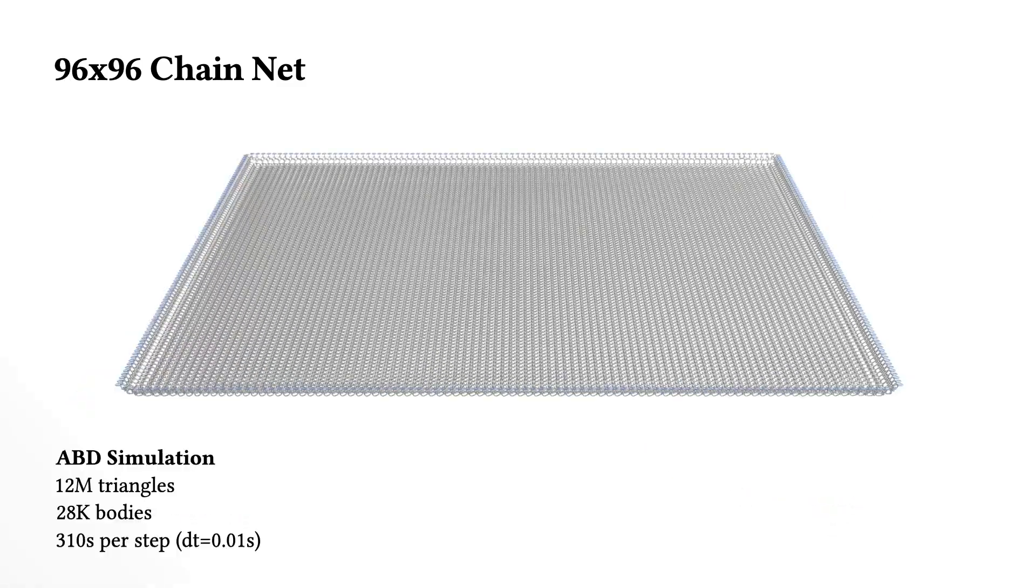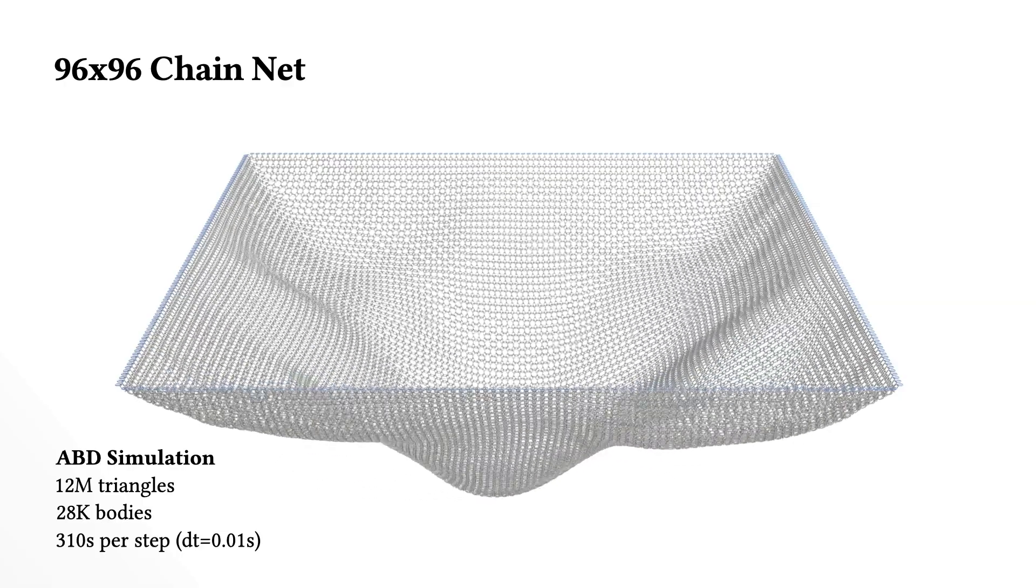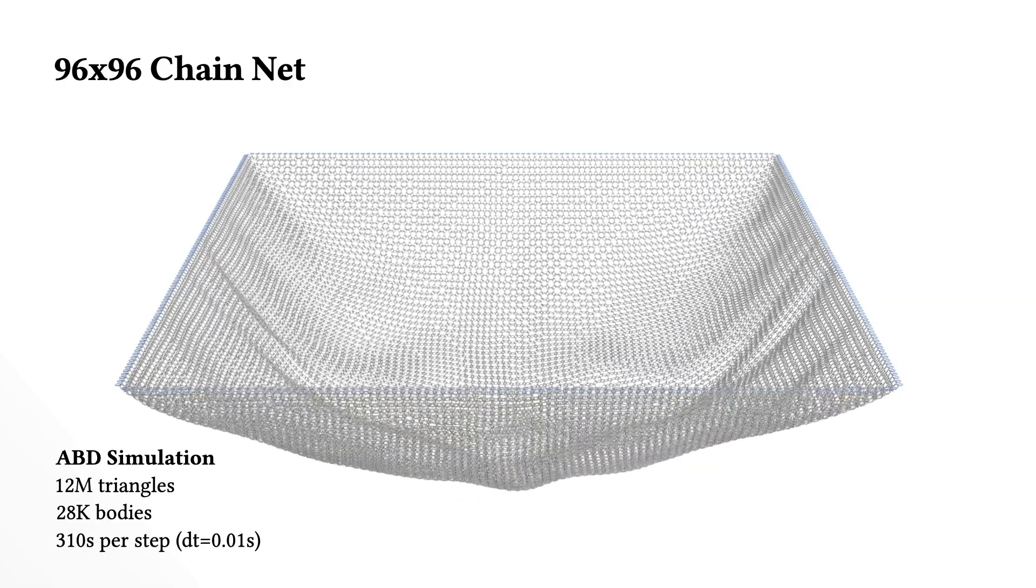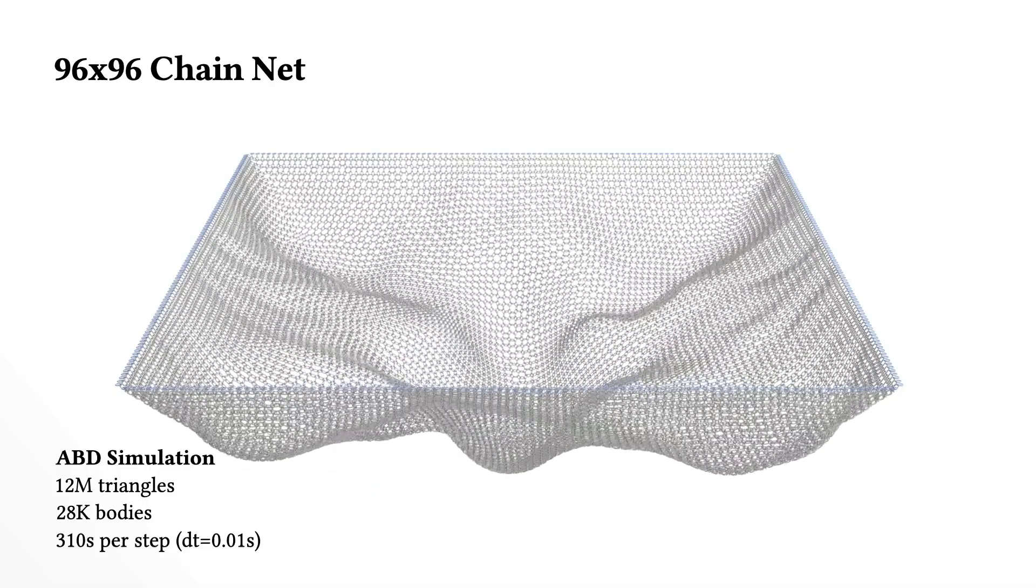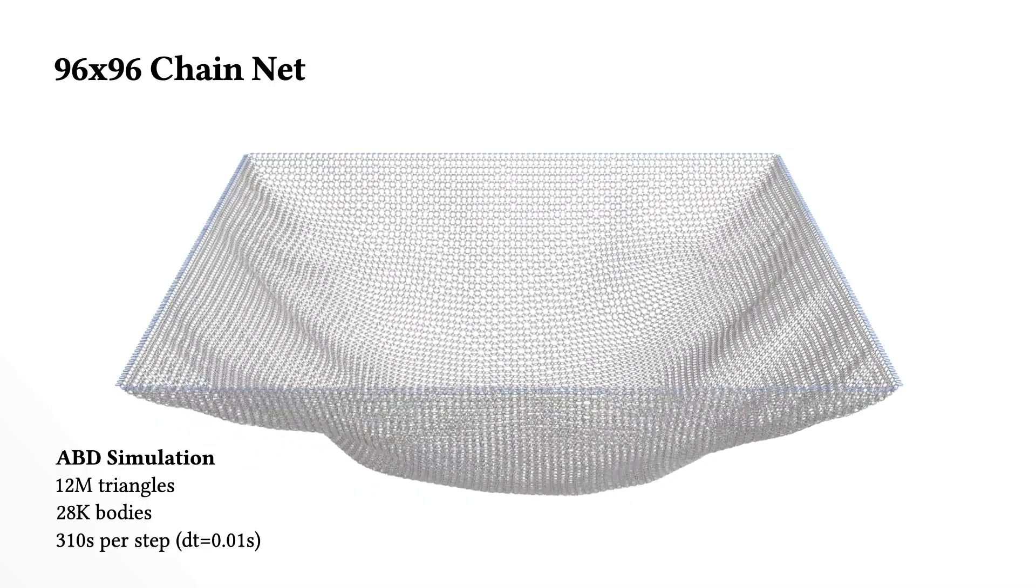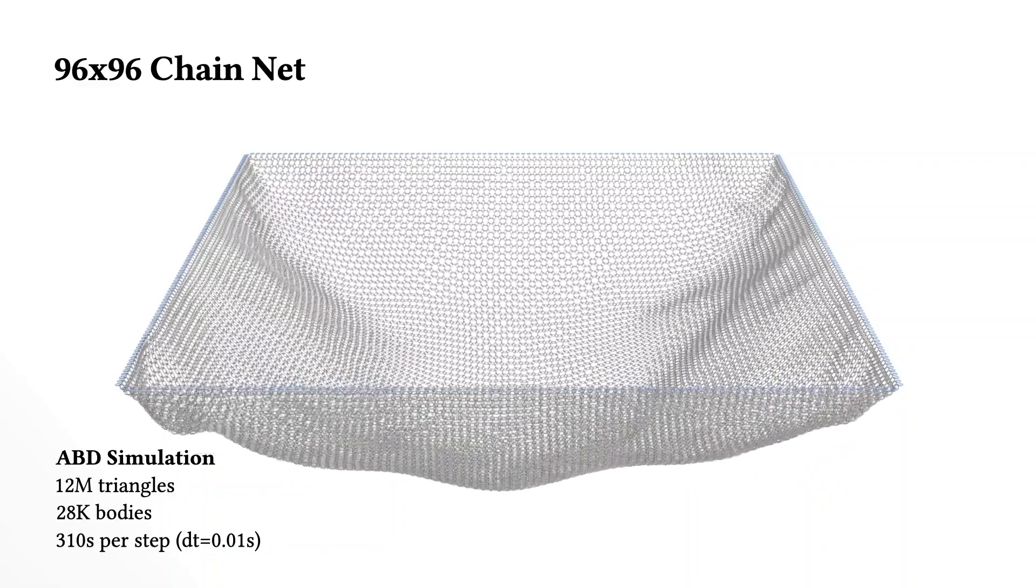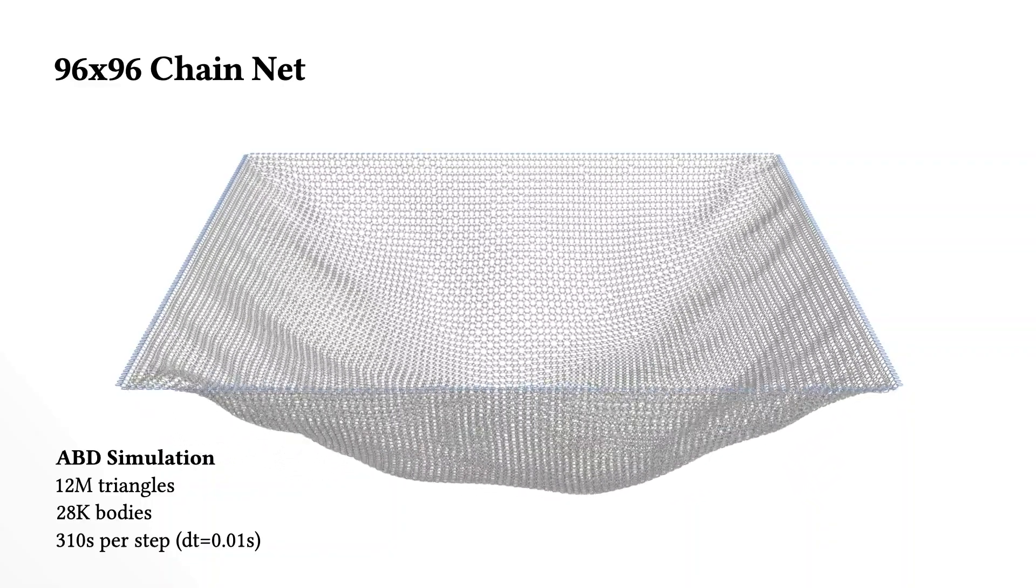As we continue to grow the scale of the domain, here at a 96x96 chain net, we are well past what is possible for both the rigidIPC and Bullet solvers. With a domain this large, the chainmail net rebounds with the initial waves clearly propagating along.